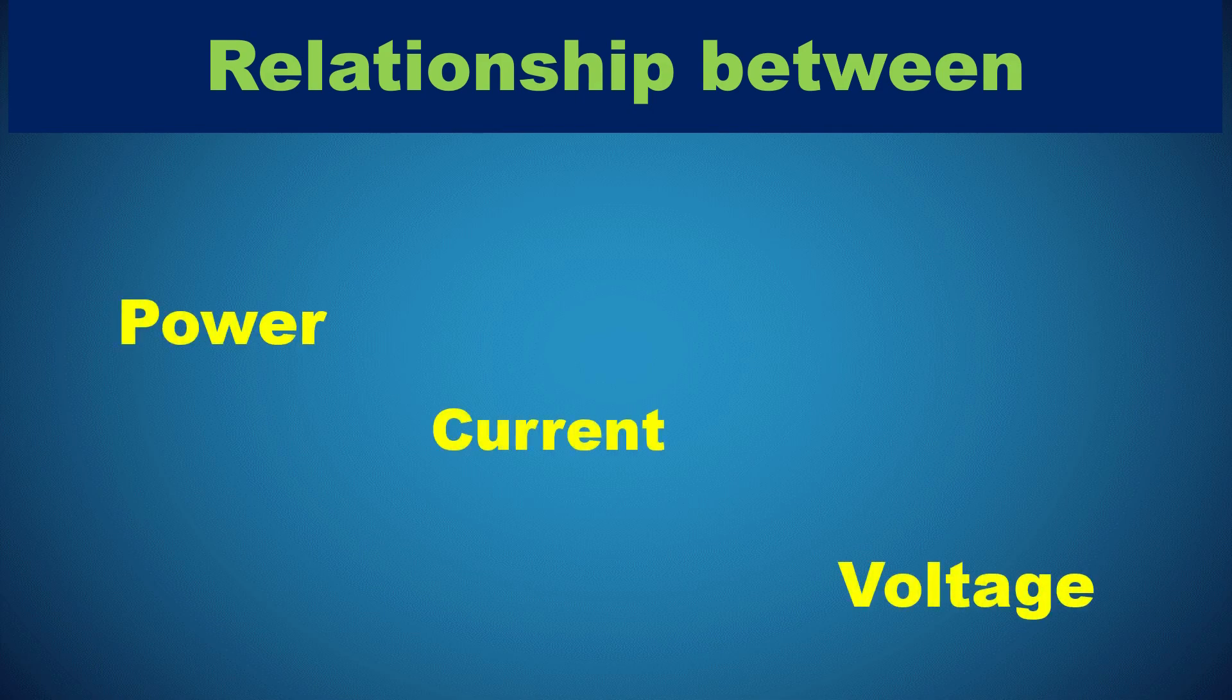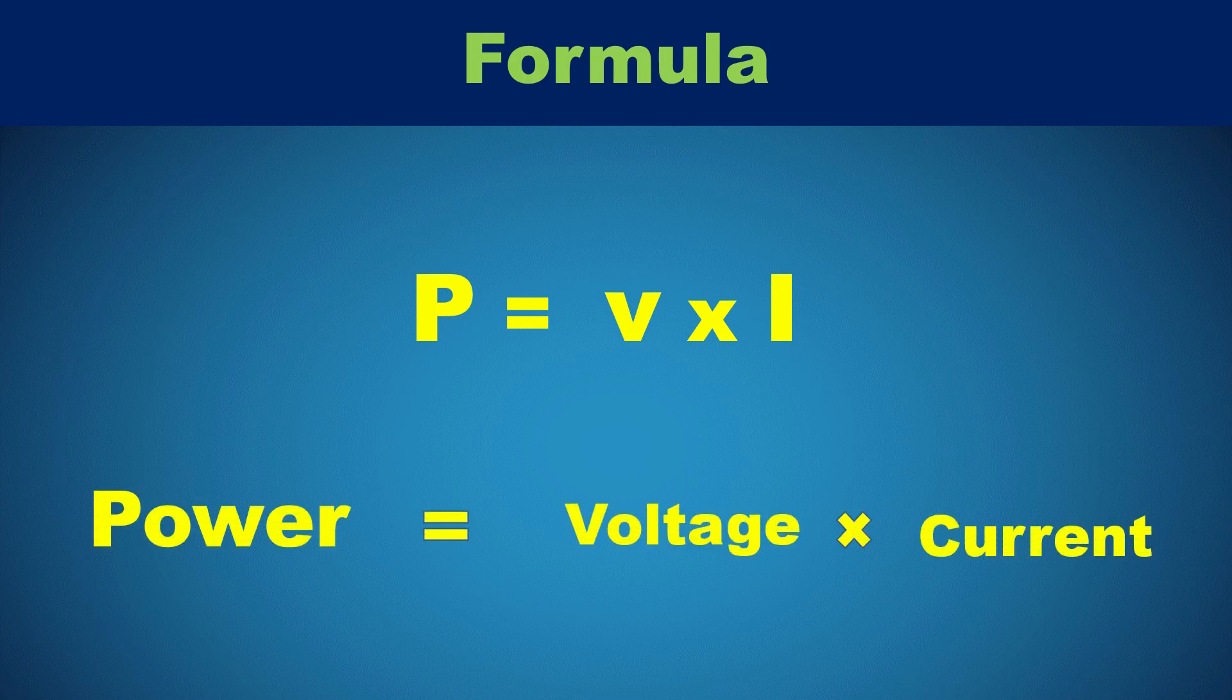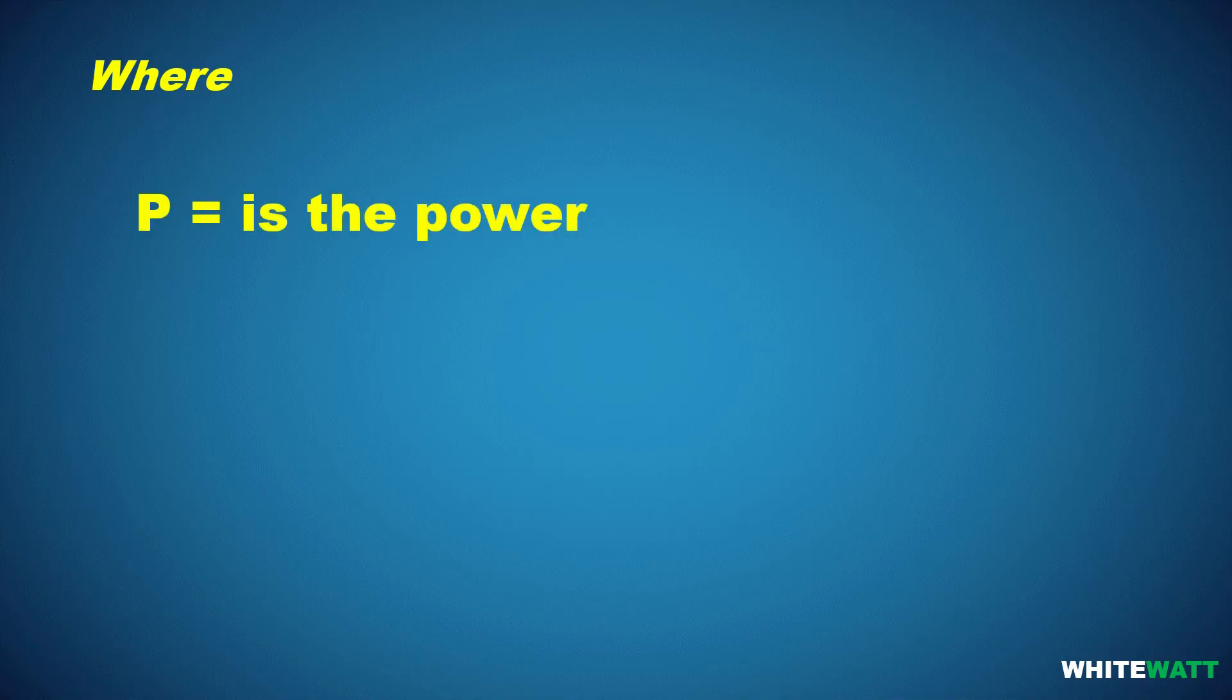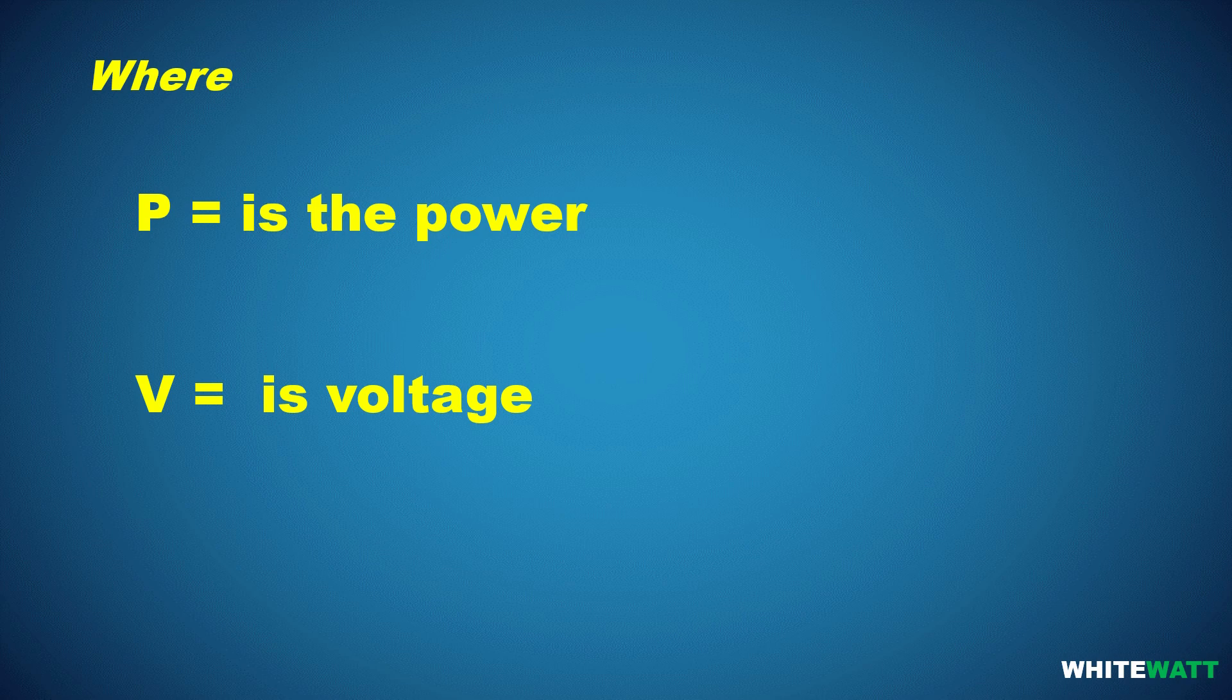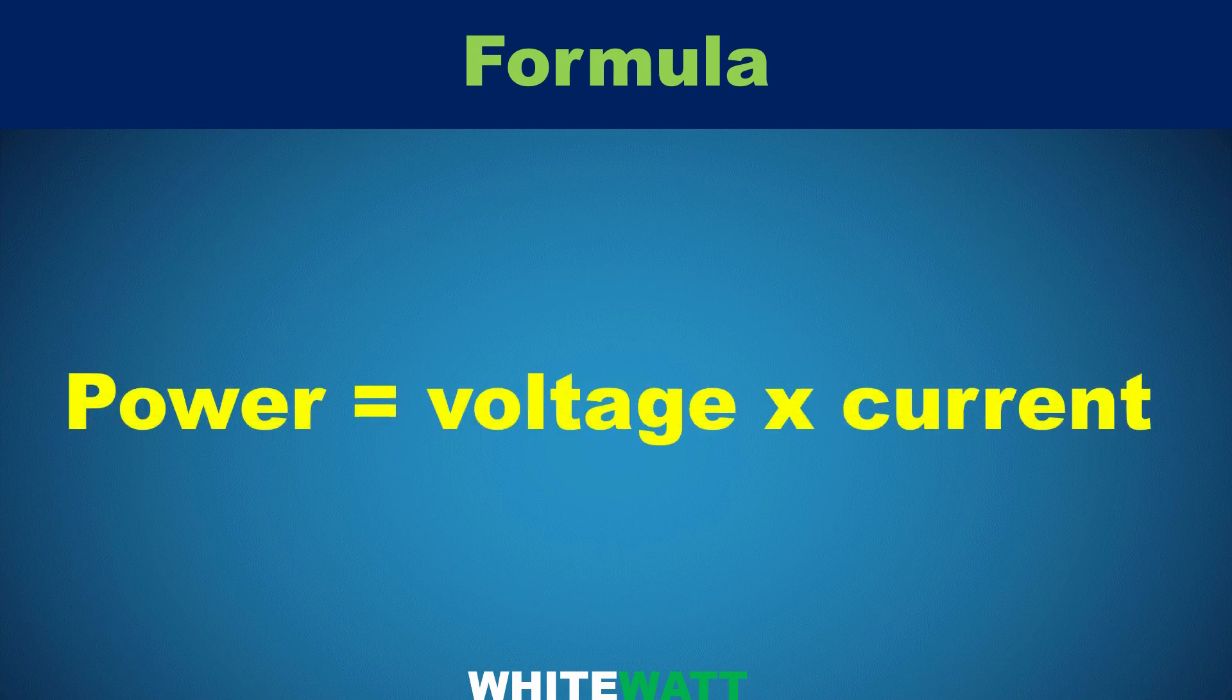This is given by the formula P = V × I, where P is the power in watts, V is the voltage in volts, and I is the current in amperes. This equation tells us that power equals the product of voltage and current.